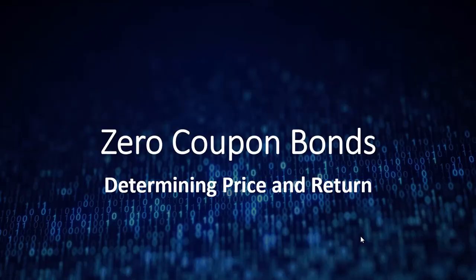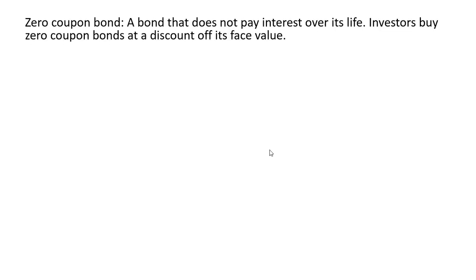In this video we're going to look at zero coupon bonds. A zero coupon bond is a bond that does not pay interest over its life. Investors buy zero coupon bonds at a discount off its face value, and once the bond matures the investors receive the face value.